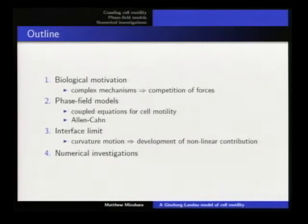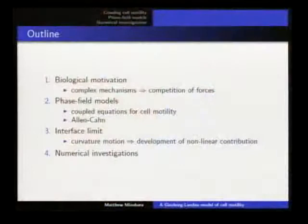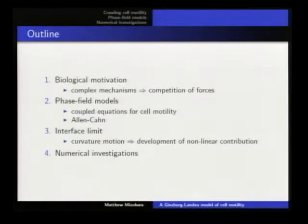In order to properly motivate the model that we'll be using in the analysis, I first need to begin by explaining the basics of the biology and the physics of how a cell crawls. This will help us motivate the actual phase field model, which was used to model cell motility in a very effective and efficient way. From there, I'll explain this in comparison to a classical model called the Allen-Cahn phase field model. Next, I'll move into the interface limit, where we consider the phase field model as the interface parameter tends to zero. Finally, I'll hopefully have some time to show you some numerical investigations at the end, where we can see some of the interesting behavior which arises.